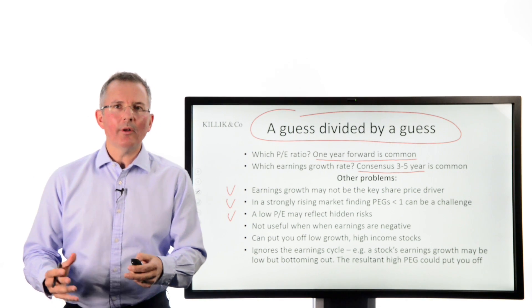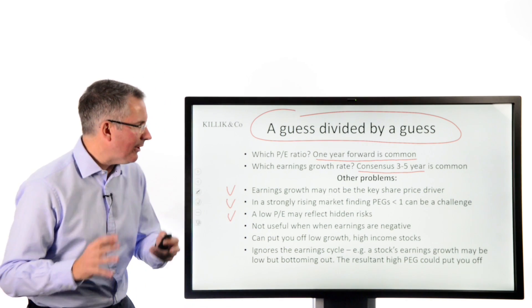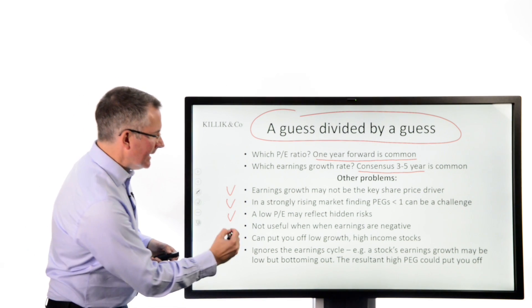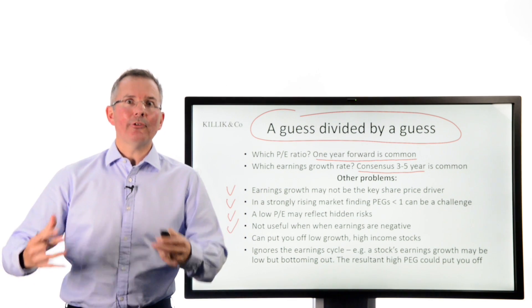It might not be that the market's got it wrong. It might be there are hidden risks, debt and so on, sitting behind that low PE ratio. It doesn't really work when earnings are negative. It's mathematically difficult even when earnings are positive. When they're negative, it kind of leaves you stranded.